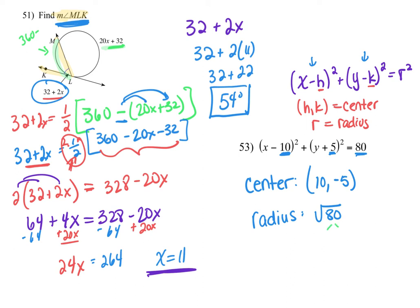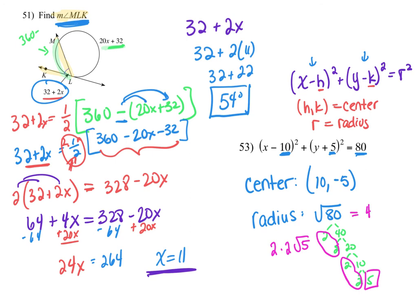Use your factor tree for 80: 2 and 40, 2 and 20, 2 and 10, 2 and 5. Remember, if it pairs up, it can come out. I have a pair of 2s that can come out, and a 5 that stays in. So 2 times 2 is 4, and my radius is 4 square root of 5.